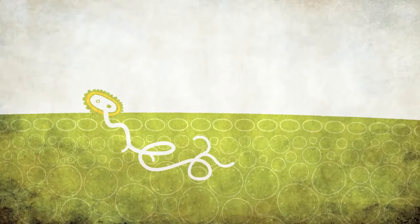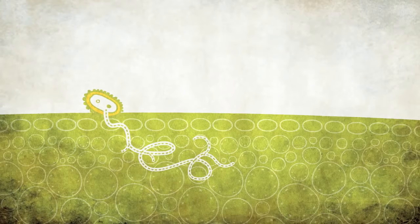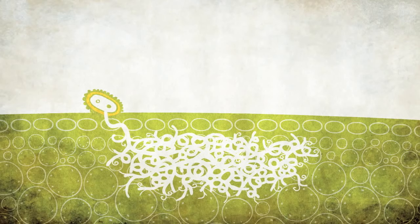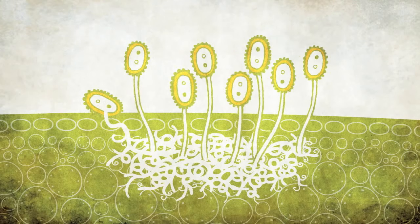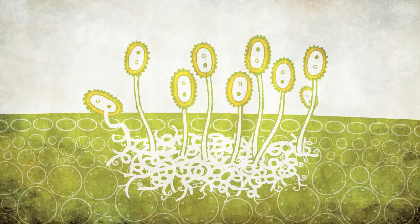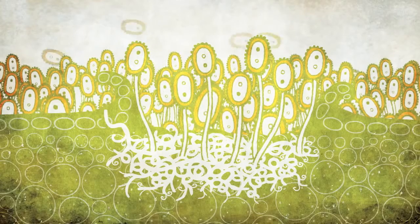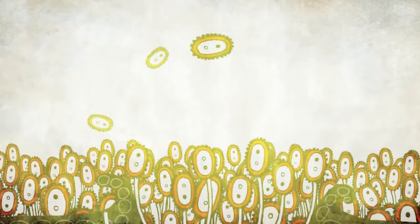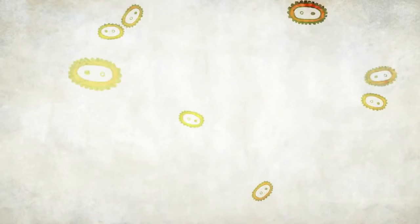Once inside the host tissue, the pathogen extracts nutrients from the wheat plant's cells, grows, and eventually produces a new generation of uridinia spores in such abundance that the plant's tissue erupts, releasing the new spores into the air to repeat the infection process elsewhere.